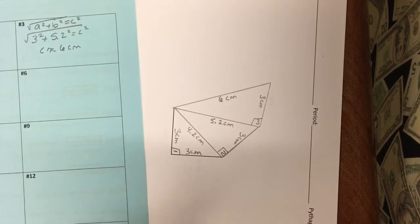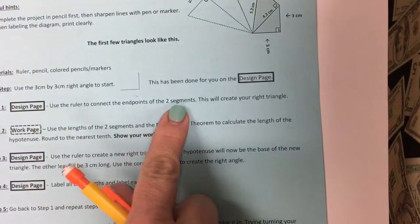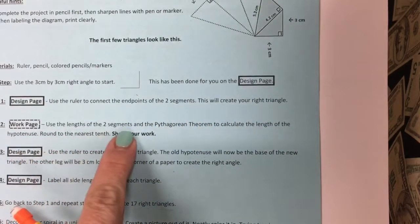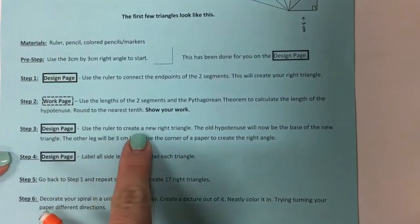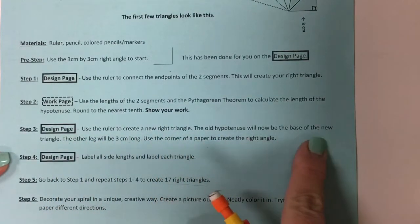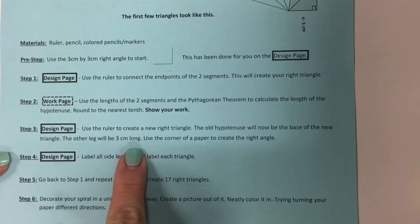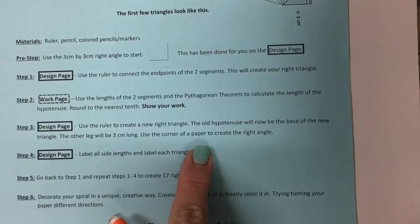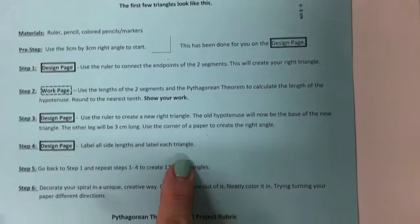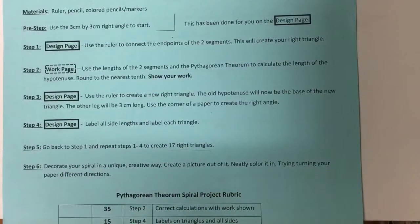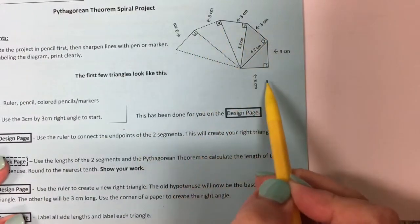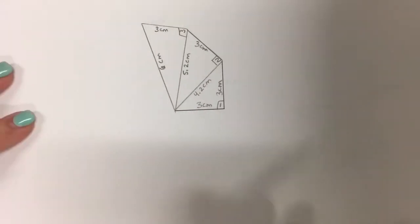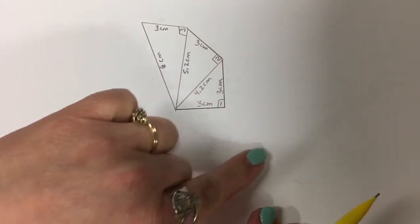I'm just going to keep repeating these steps: use the ruler, connect the two segments, create my right triangle, use the length of the two segments and the Pythagorean Theorem to calculate the length of the hypotenuse, round to the nearest tenth, show your work, use the ruler to create a new right triangle, the old hypotenuse becomes the base of the new triangle, the other leg is 3 centimeters, use the corner of a paper or ruler to create the right angle, label all side lengths and each triangle. Repeat until you have 17 right triangles and it will create your spiral. This is what the first few triangles look like — we've made three, and you'll keep going and the spiral will work its way around.